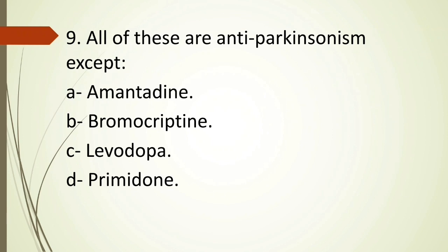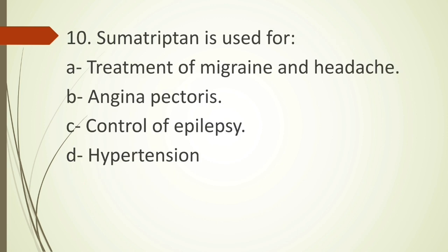Ninth question: all of these are anti-parkinsonism drugs except — option A amantadine, option B bromocriptine, option C levodopa, option D primidone. Amantadine, bromocriptine, and levodopa are all anti-parkinsonian drugs. The exception is primidone, which is an anti-epileptic drug. The correct answer is option D, primidone.